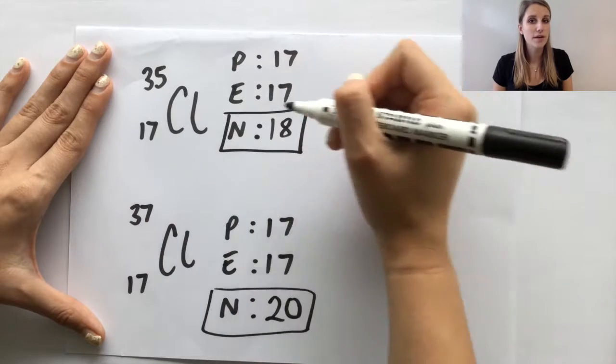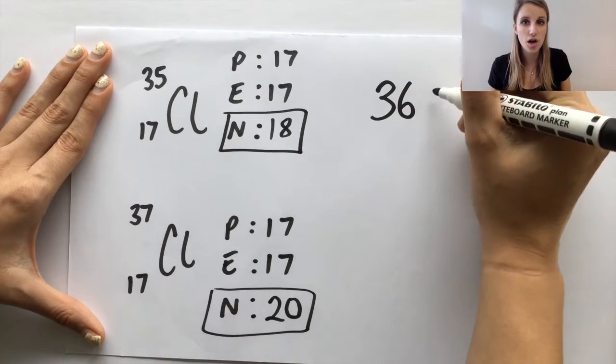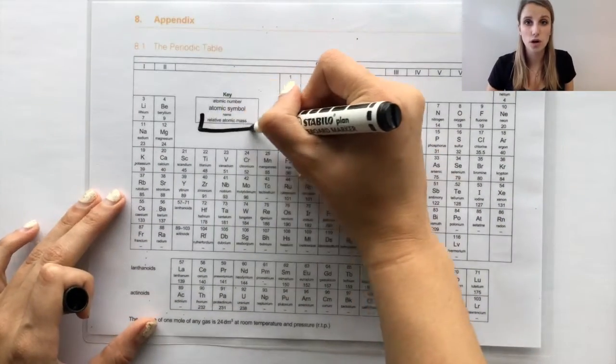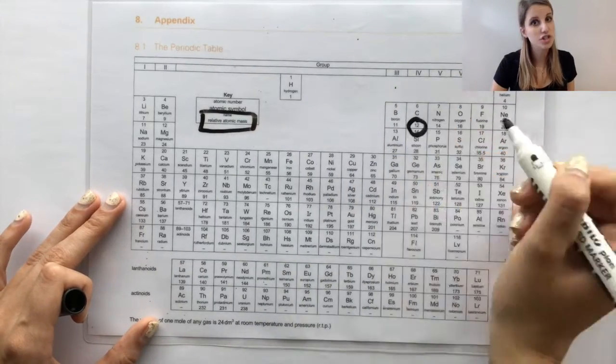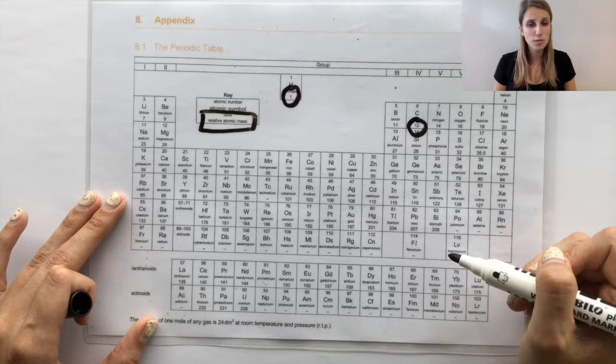But if we have a look at the periodic table, which is where we find the relative atomic masses. You can see on the key here, it shows relative atomic mass. And then you've got carbon, which is 12, and you've got hydrogen, which is 1. If we look at chlorine on the right-hand side, you will find that the relative atomic mass is 35.5.